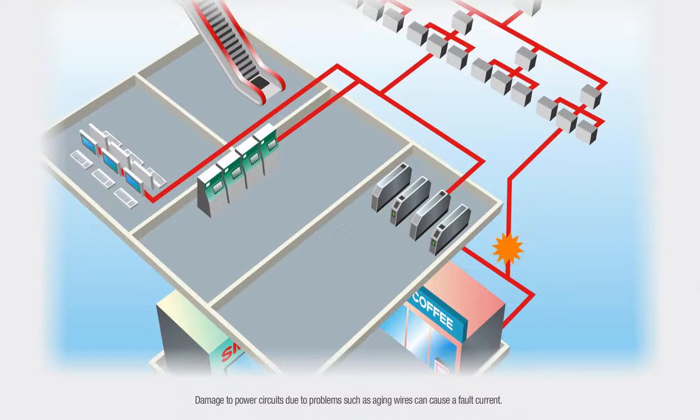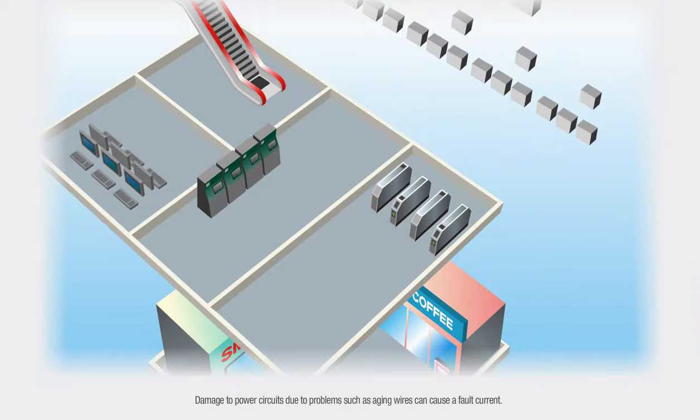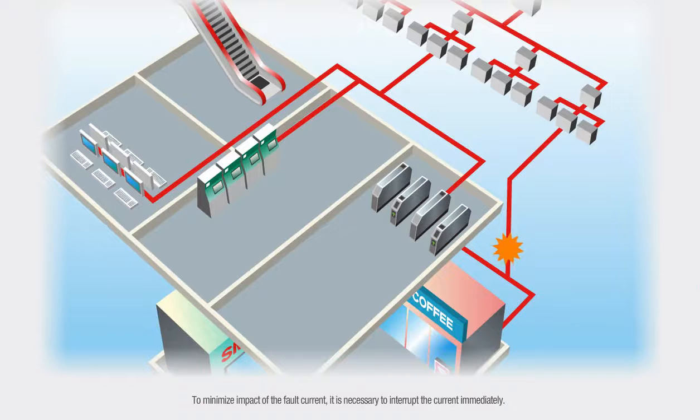Damage to power circuits due to problems such as aging wires can cause a fault current. To minimize impact of the fault current, it is necessary to interrupt the current immediately.